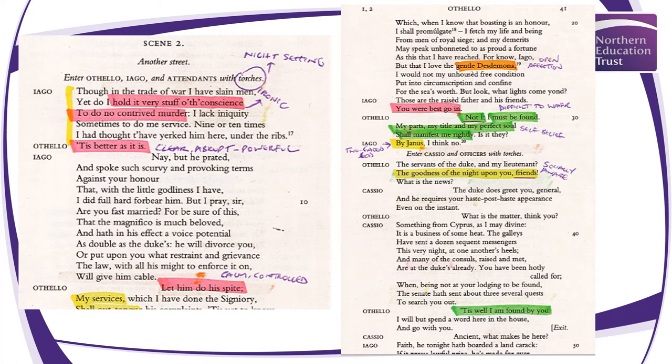We enter the scene in the middle of a conversation. Iago says, 'Though in the trade of war I have slain men, yet do I hold it very stuff of conscience not to do no contrived murder. I lack iniquity sometimes to do me service. Nine or ten times I had thought to have yerked him under the ribs.' Iago immediately establishes his duplicity. And then Othello says his first line: 'Tis better as it is.' This is significant — his first line is clear, direct, abrupt, and powerful.